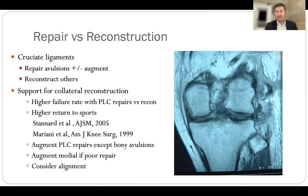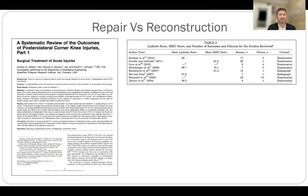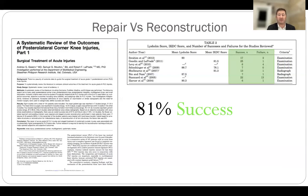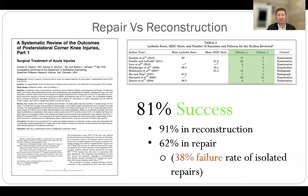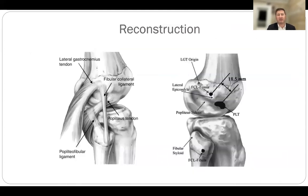Repair versus reconstruction: isolated repair alone has higher rates of failure; there is high return to sport with combined reconstruction and repair. This meta-analysis performed by the Rob LaPrade group looking at the success of acute posterolateral corner treatment showed overall success rates of 81%, rising to 91% wherever a reconstruction was performed, dropping to 62% with isolated repair. An isolated repair has up to a 40% chance of failure, so I always do a reconstruction and combine it with repair.